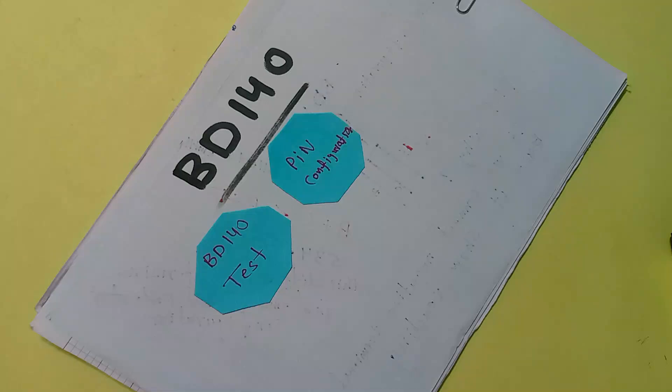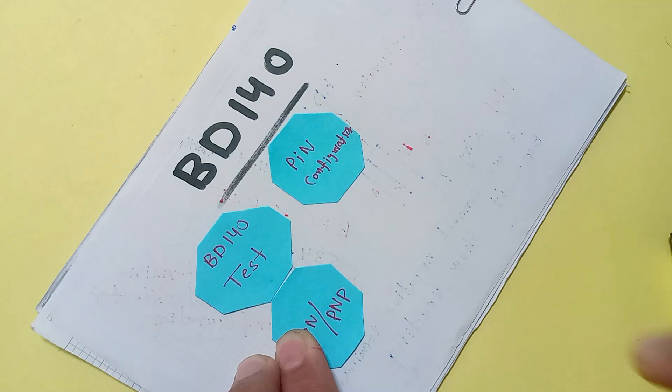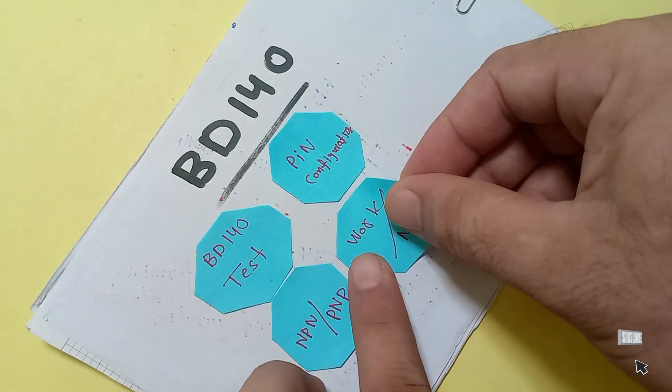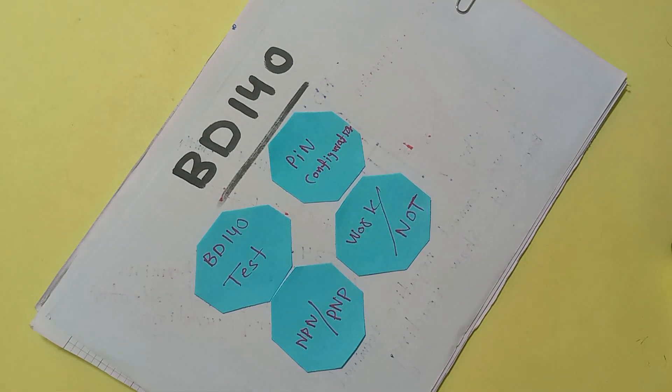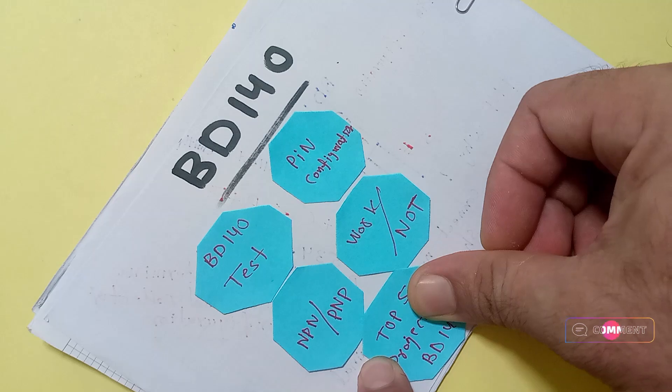Is it PNP or NPN type transistor? How do we know that it works or not? And I also provide a link of basic projects using BD-140 type transistor.